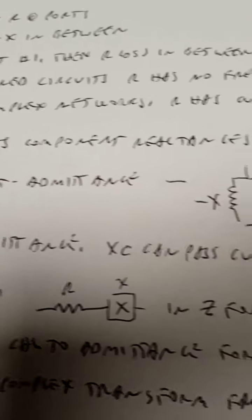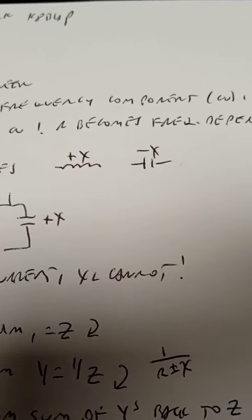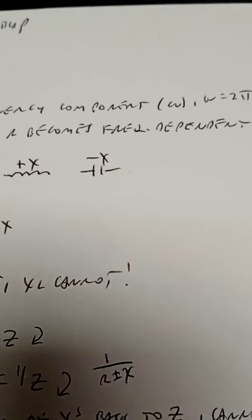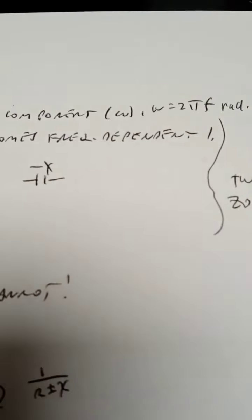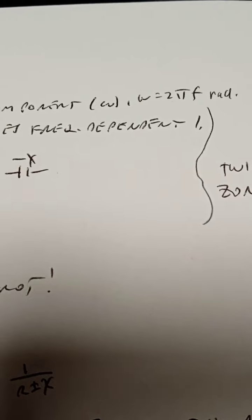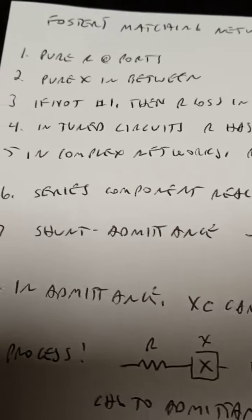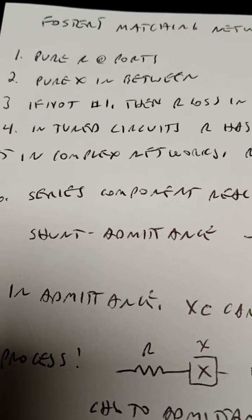In tuned circuits, R has no frequency component. I've been hammering on that point especially in the antenna videos. There's no omega, or omega in engineering notation is 2 times pi times the frequency in radians. Resistance in the real world does not care about frequency. Irrelevant.